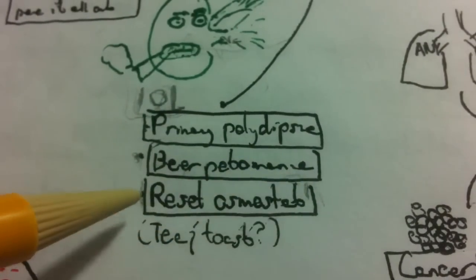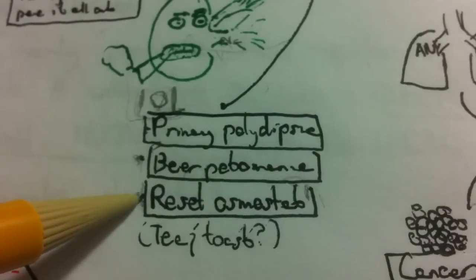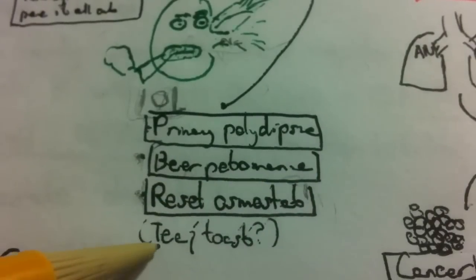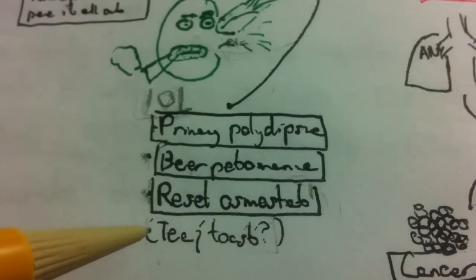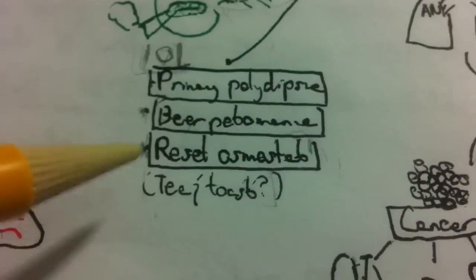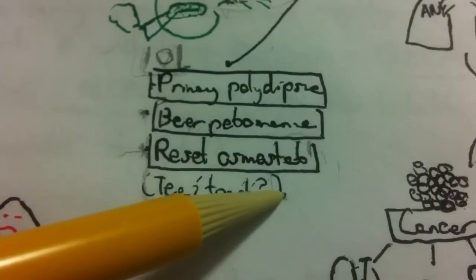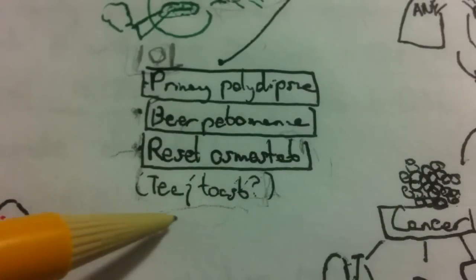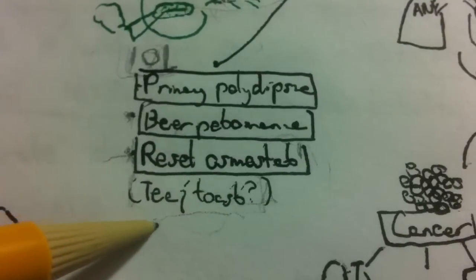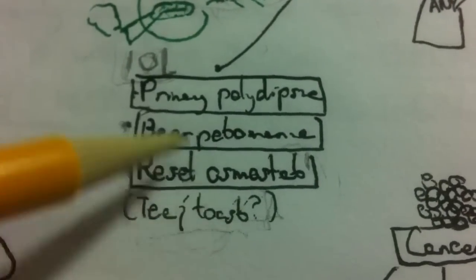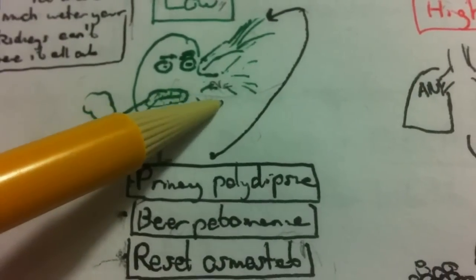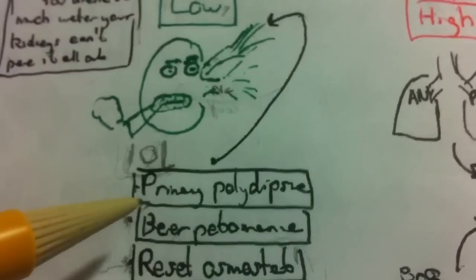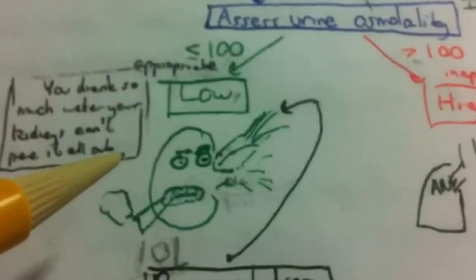Reset osmostat: these people do fine — they just operate at a constantly lower sodium than the rest of us. Also, this low-ADH euvolemic pattern can be seen in pregnancy, which is one reason pregnant women can be mildly hyponatremic. Finally, the tea and toast diet — similar to beer potomania in that you're not taking in any salt at all, so even the small amount of salt required to produce dilute urine is more than you're taking in, leaving you hyponatremic.